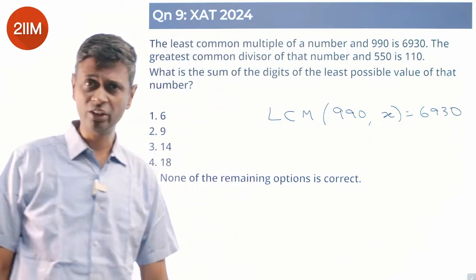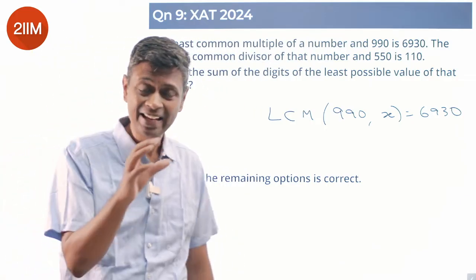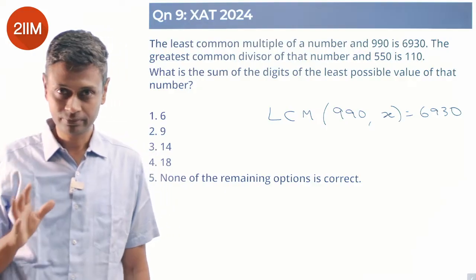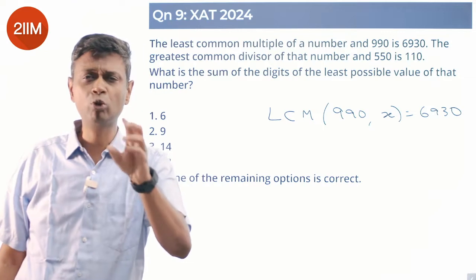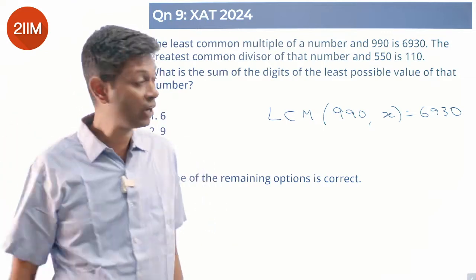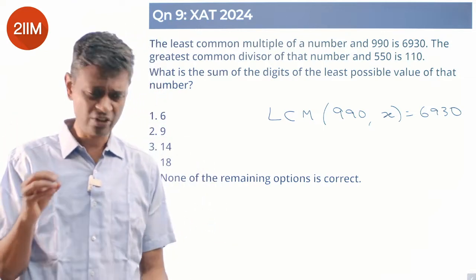990 times 7 is 6930. So X has to have a 7 in it. 6930 has a 7, but 990 does not have a 7, so X must have a 7 in it. X could be just 7, that's fine. X has 7 sitting inside it.